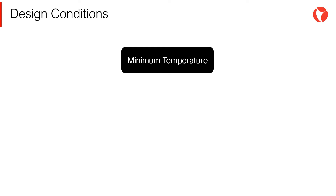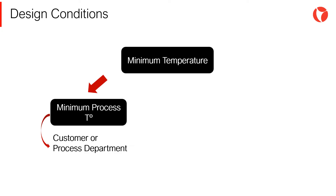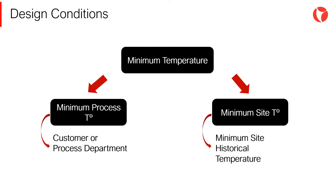The minimum temperature at which the pressure vessel will operate is the minimum value of the minimum process temperature. This information must be provided by the customer or the process department. Secondly, the minimum temperature of the site, which is determined based on historical data.